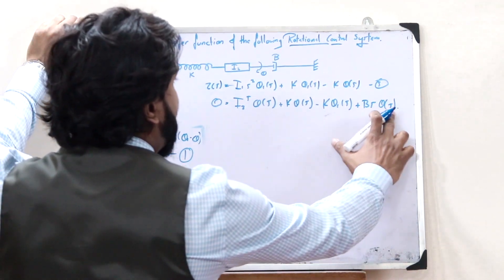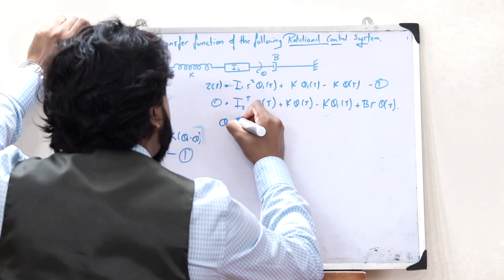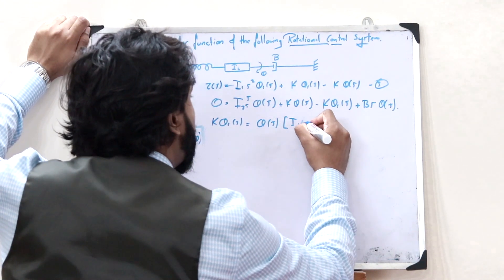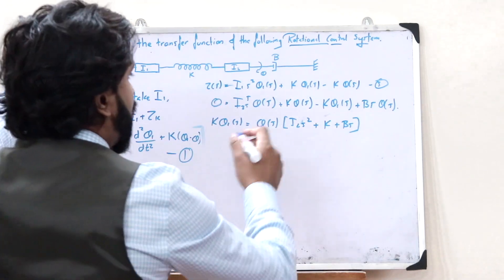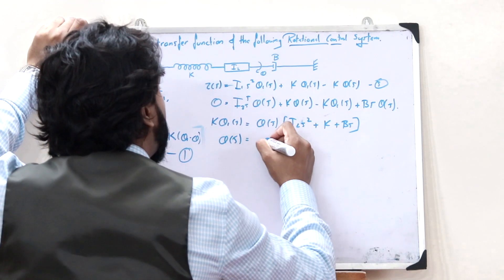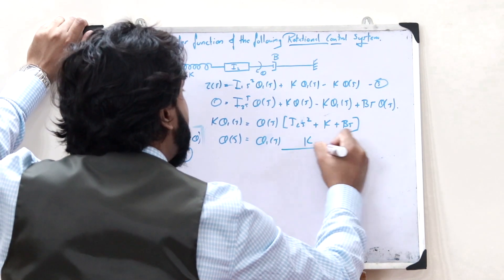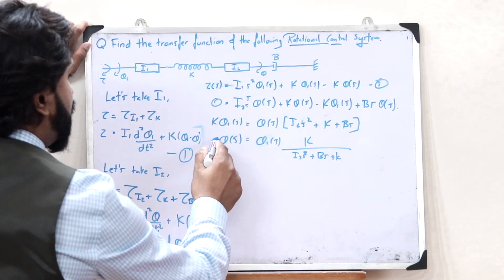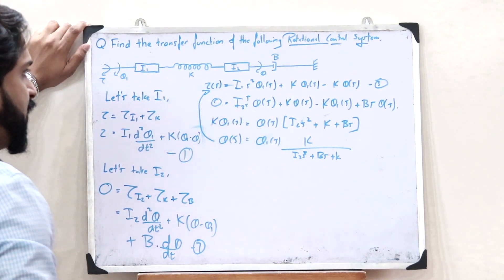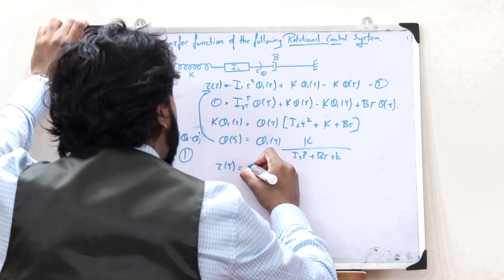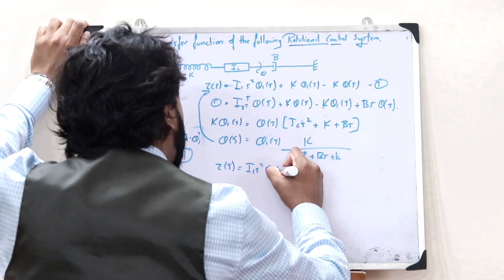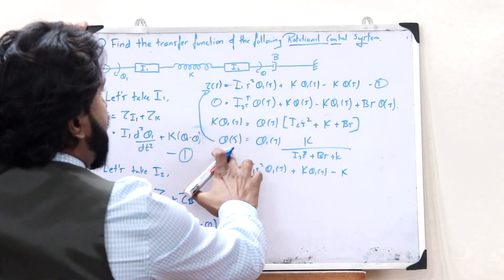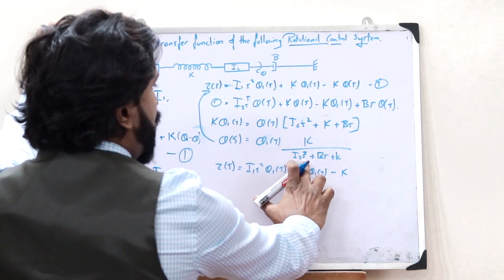Now let us group the theta(S) terms and theta1(S) terms. What we get is that theta1(S) into K is equal to theta(S) into I2 S squared plus K plus B·S. From this, we get theta(S) is equal to theta1(S) into K divided by I2·S squared plus B·S plus K. Now let us substitute this value into equation 3, where the value of theta(S) is given as theta1(S) into K divided by I2·S squared plus B·S plus K.